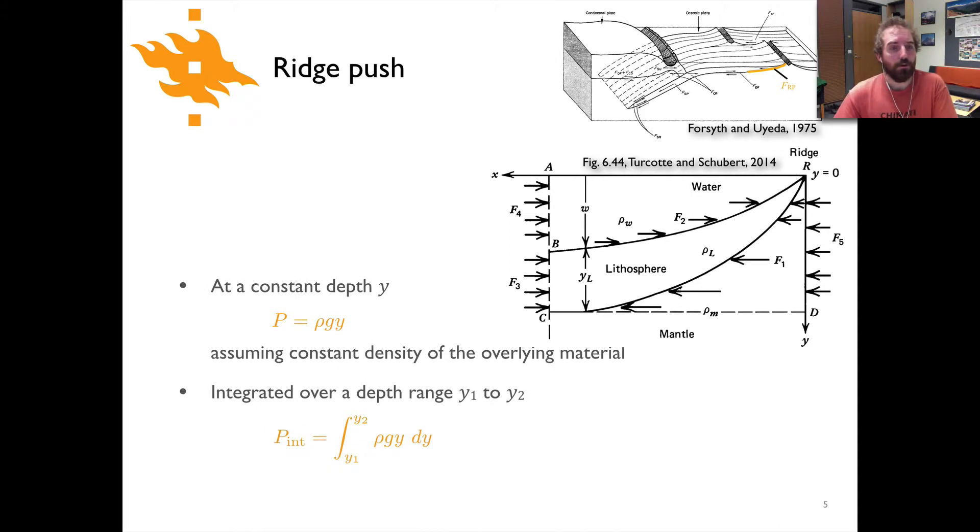So those are our three parts. The method for dealing with these is essentially, well we know at a constant depth the pressure is simply ρgy at some depth y. And if we want to then calculate the pressure that's integrated from one depth to another, we simply take the integral from the starting depth to the final depth of ρgy dy, and if you integrate that then that will give you the integrated pressure.